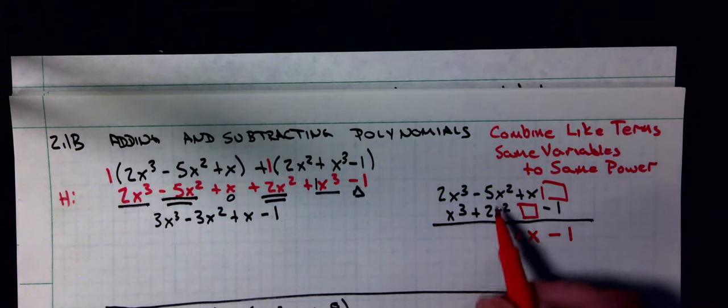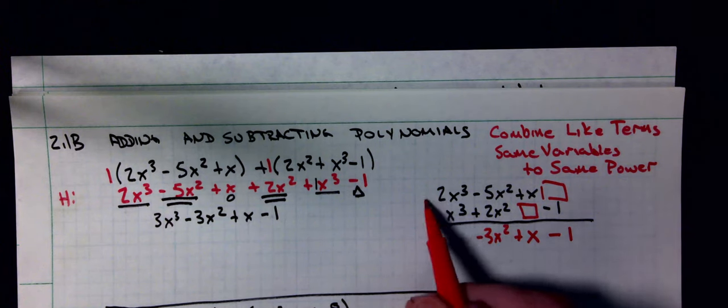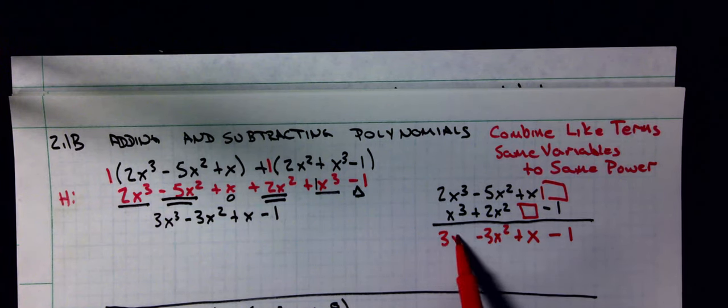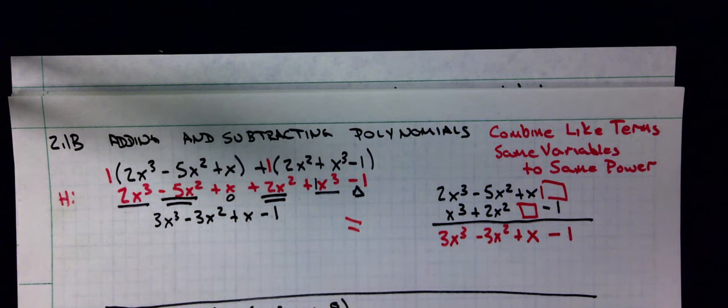I'm just going to add stuff vertically. Negative 5 plus 2 would be negative 3x². Plus 1 is x³. These better both equal each other. I do not care which method that you have.